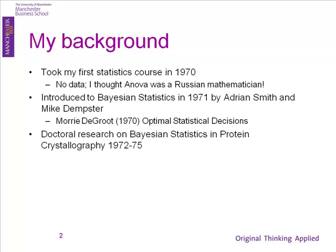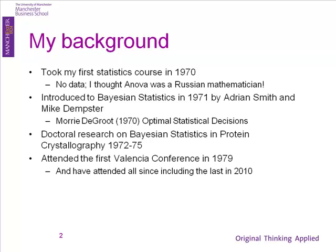It was one of the first big-ish computer problems using Bayesian stats. In 1979 there was a big conference in Valencia — big! There were 79 of us. It was reputed to be the largest gathering of Bayesian statisticians ever from across the world, so you can work out we were quite a small number of people.